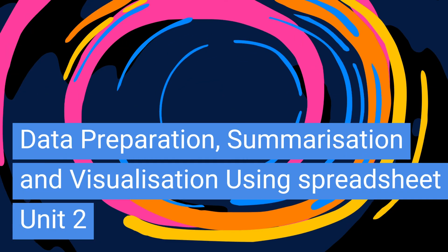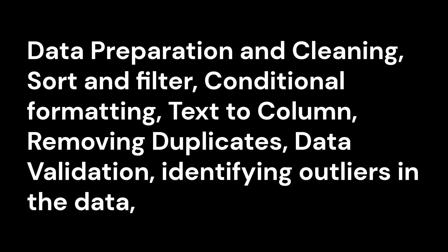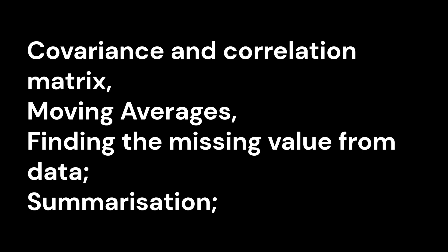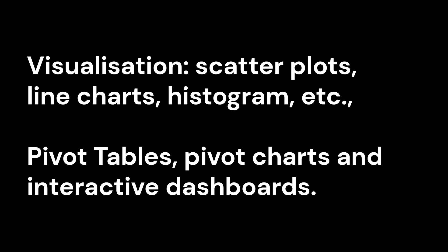Next is Unit 2: Data Preparation, Summarization and Visualization using Spreadsheet. Topics include Data Preparation and Cleaning, Sort and Filter, Conditional Formatting, Text to Column, Removing Duplicates, Data Validation, Identifying Outliers in the Data, Covariance and Correlation Matrix, Moving Averages, Finding the Missing Value from Data, Summarization, Visualization — Scatter Plots, Line Charts, Histogram, etc. — Pivot Tables, Pivot Charts, and Interactive Dashboards.